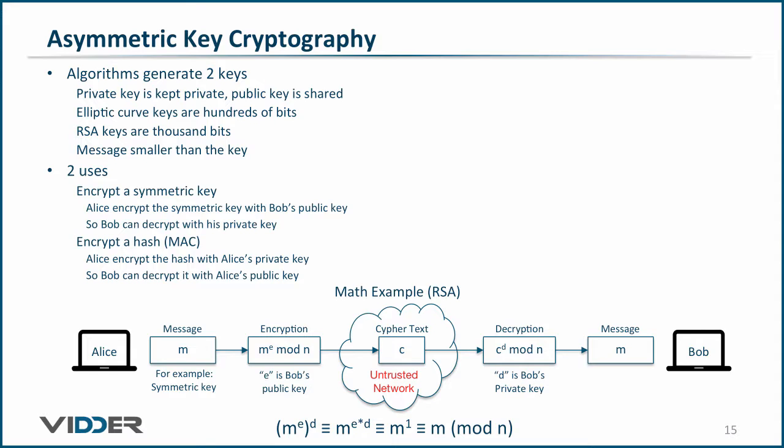That is, you can first raise the message, such as a hash, to the power D, and then to the power E, and return the original message, such as the original hash value.